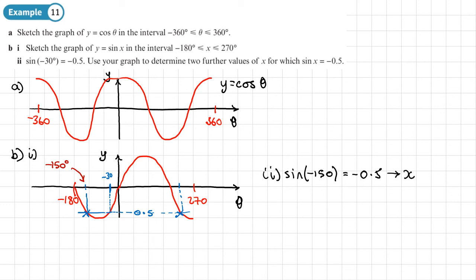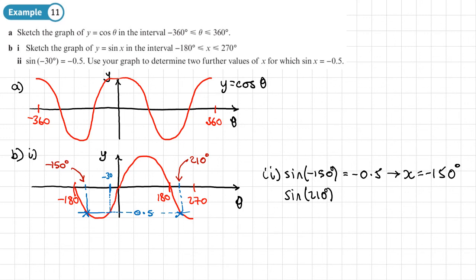There is also another value where we get negative 0.5. Using the same symmetry — a gap of 30 degrees on this side — and knowing this angle is 180, we get 180 plus 30 equals 210 degrees. So sin(210°) = −0.5, giving a value of x as 210 degrees.